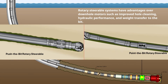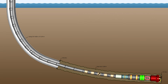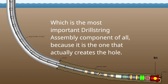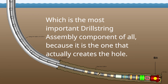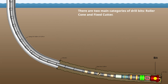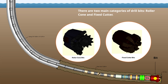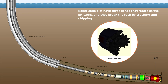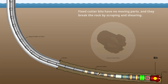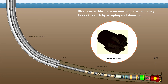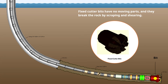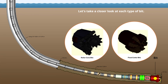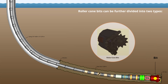The last component is the drill bit, which is the most important because it actually creates the hole. There are two main categories: roller cone and fixed cutter. Roller cone bits have three cones that rotate as the bit turns and break the rock by crushing and chipping. Fixed cutter bits have no moving parts and break the rock by scraping and shearing.